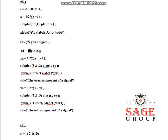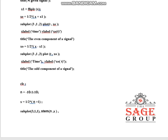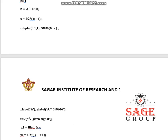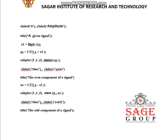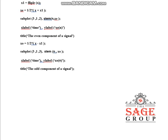Now we find the even and odd components of a discrete time signal. For a discrete time signal, the time parameter n ranges from minus 10 to plus 10 with an interval of 1. The signal expression is half into n plus 1. To plot the given signal: subplot(3,1,1), stem(n, x), x-label n, y-label amplitude, title 'given signal'. For the folded signal, x1 is equal to fliplr(x).